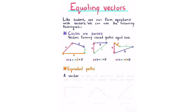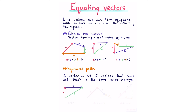Equivalent paths. A vector or set of vectors that start and finish in the same place are equal. So if a plus b reaches the same destination as a single vector c, then a plus b equals c. Similarly, if a plus b reaches the same destination as c plus d, then a plus b equals c plus d.